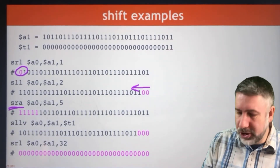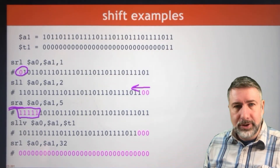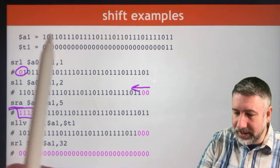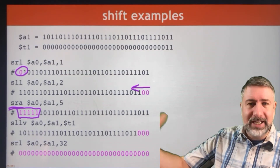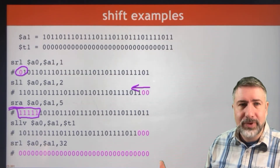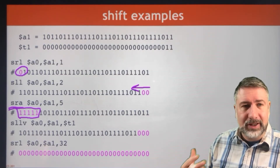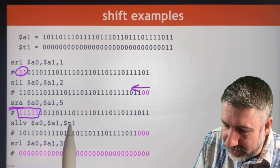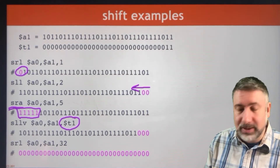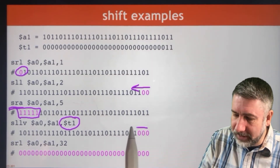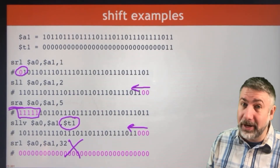With shift right arithmetic, we shift in this case by five, shifting five sign bits into the register. Whatever large negative number this is, the sign will be preserved even as we divide by two five times. The next example is shift left logical variable, which means we shift by the amount stored in T1 rather than the shift amount field. T1 contains the number three, so we shift left logical by three. Note that shifting by 32 is incorrect since the most we can shift is 31.